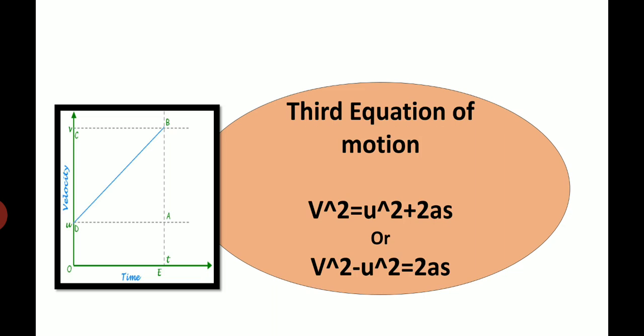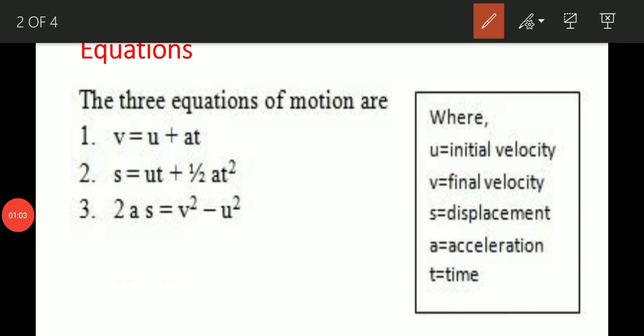The first equation was v equals u plus at, and the second equation was s equals ut plus half at square. To revise: the first equation is the velocity-time relation, the second equation is the position-time relation, and the third equation is the position-velocity relation.